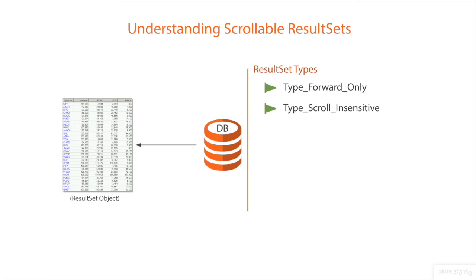TYPE_SCROLL_SENSITIVE: if used, the cursor can scroll forward and backward, and the result set is sensitive to changes made by others to the database that occur after the result set was created. If we don't specify any result set type, then the default result set type will be TYPE_FORWARD_ONLY.